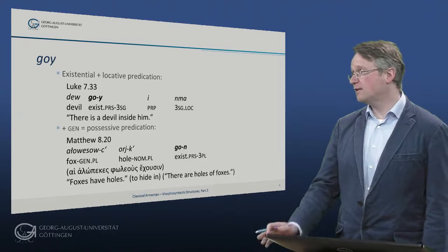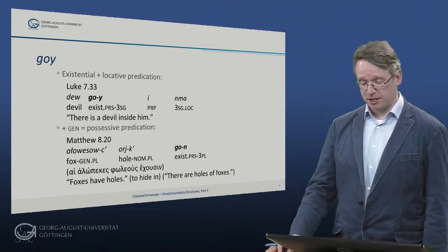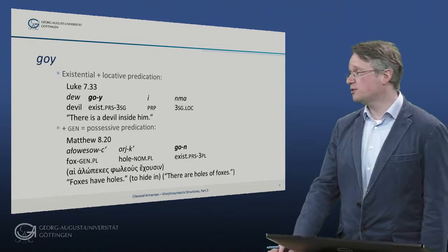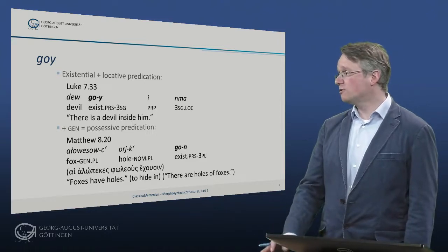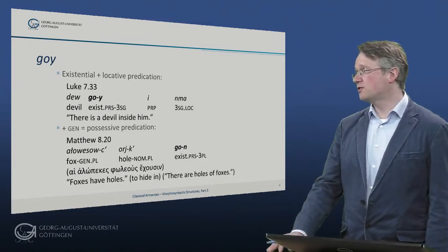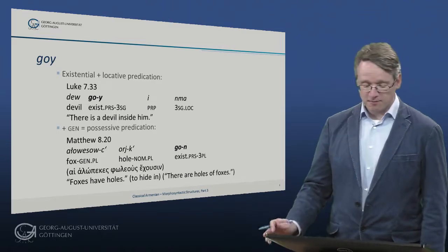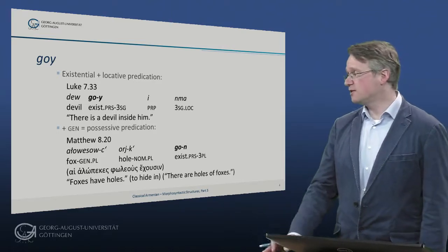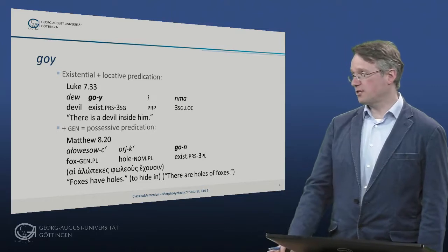And 'go' is combinable with a genitive for possessive predication. So in Matthew 8:20, 'Ach wesuts worts are gone' — the foxes have holes to hide in. Literally: there exist holes of foxes.